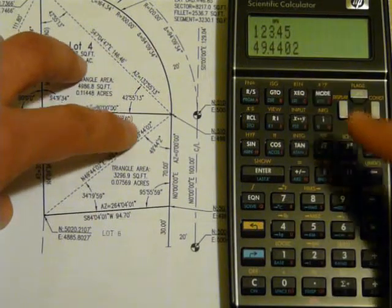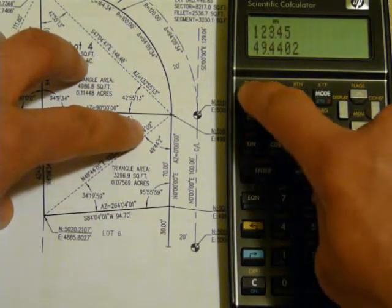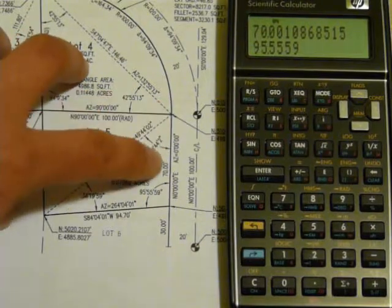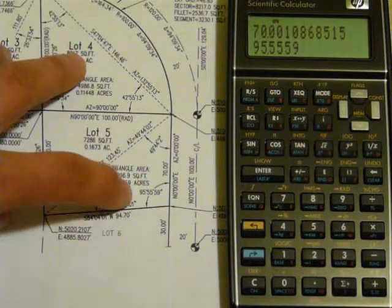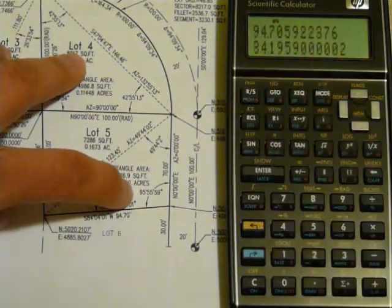49, 44, 02 for the angle. Press RS to see the next pair. 70 feet, 95, 55, 59. Press RS for the final side.